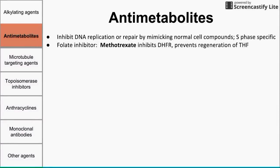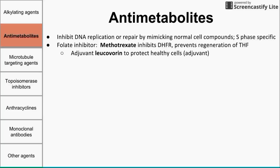The first group is folate inhibitors. The big one is methotrexate, a very commonly used drug. It inhibits dihydrofolate reductase, an enzyme that prevents the regeneration of tetrahydrofolate, and inhibits the conversion of dietary folate into tetrahydrofolate. When we administer methotrexate, we always want to do it with leucovorin. Leucovorin is an adjuvant that protects healthy cells by giving them another method of utilizing folate. Side effects of methotrexate include mucositis and myelosuppression.